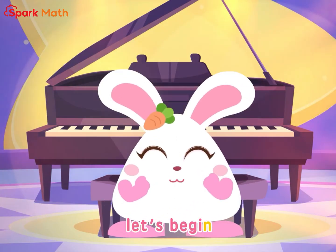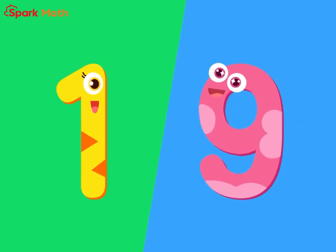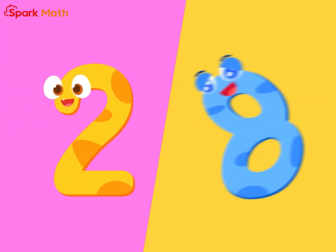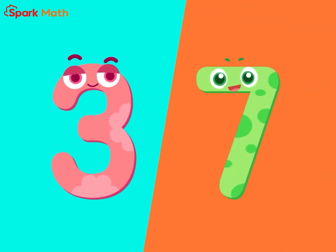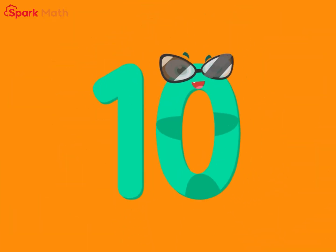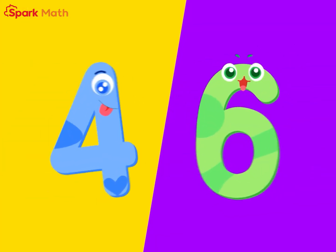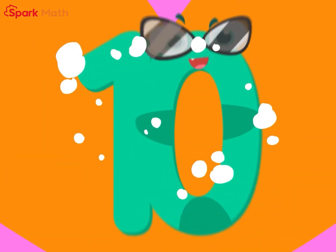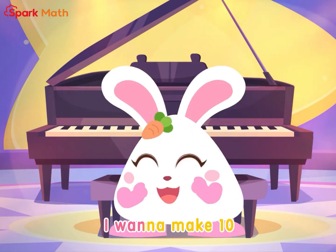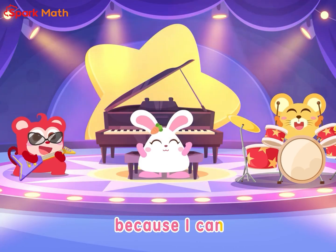Let's begin! One and nine can make a turn. Two and eight can make a turn. Three and seven can make a turn. Four and six can make a turn. Five and five can make a turn. I wanna make a turn, because I can.